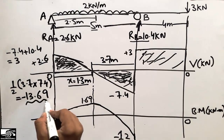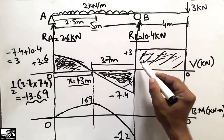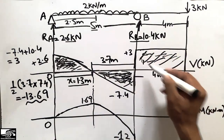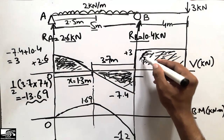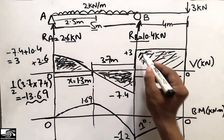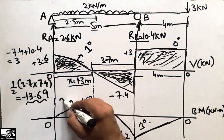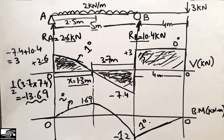The third shape is a rectangle with length 4 meters and height 3 kilonewtons. Its area is 3 into 4 equals 12. This portion is upward, so we add 12 to minus 12, giving zero. The bending moment returns to zero at the right support. The bending moment diagram is one degree higher than the shear force diagram — where SFD is zero degree, BMD is first degree; where SFD is first degree, BMD is second degree.